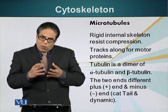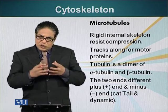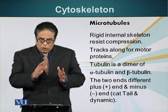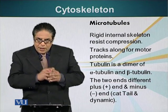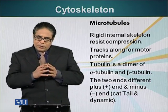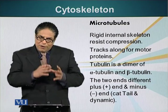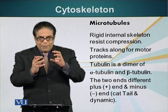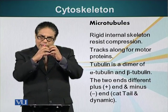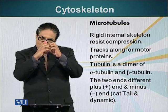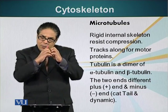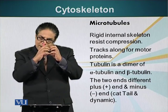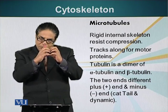Microtubules also serve as tracks along which motor proteins can move — we will talk about that later. Microtubules are made of subunits of alpha and beta tubulin. These two molecules come together to form one monomer, so one tubulin monomer is made up of alpha and beta tubulin subunits.